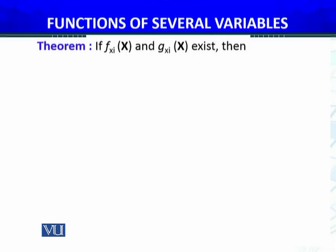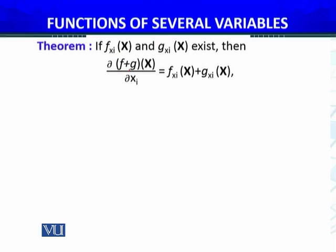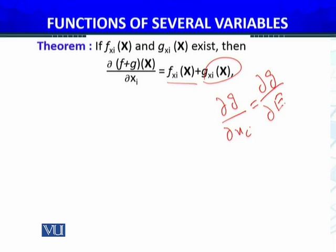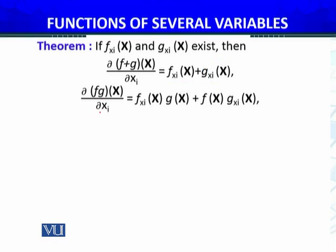The first theorem states — I am going to state it only; you can prove it easily — that if f sub x_i and g sub x_i, the partial derivatives of two functions with respect to x_i, both exist, then the partial derivative of their sum equals the partial derivative of f with respect to x_i plus the partial derivative of g with respect to x_i.